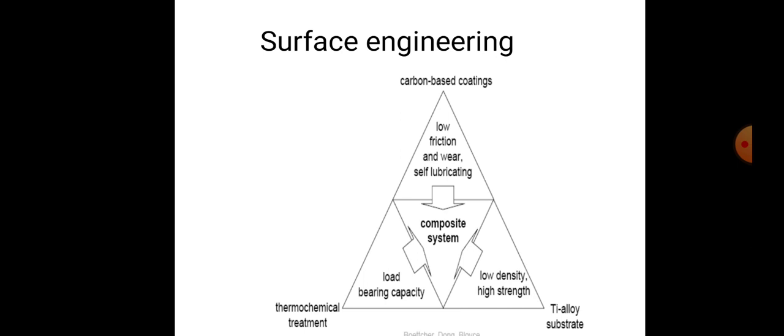Thermochemical treatment is especially used when load-bearing capacity is more important, along with low density and high strength. These are some of the coatings or surface treatments that are done.